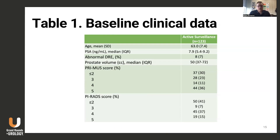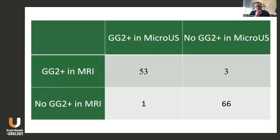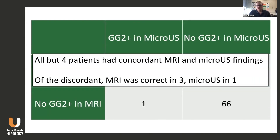The baseline characteristics represent a standard active surveillance cohort, and the imaging is very similar — about 30 to 40% have negative imaging and about 60% have some positive imaging findings, whether by micro-ultrasound or MRI. Interestingly, we found a very high rate of upgrading to Gleason grade group 2 — 46% of men were upgraded at confirmatory biopsy. When comparing upgrading by micro-ultrasound or MRI, the results are concordant in all but four patients, meaning both modalities agreed on whether someone was positive or negative in terms of upgrading.